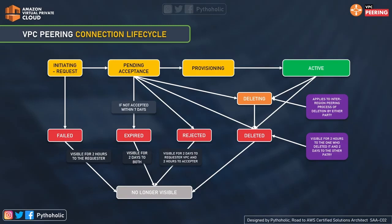To summarize the lifecycle — refer to the flow diagram for better understanding. You initiate the request, which may go to the pending acceptance stage where the acceptor has to accept it, moving it to the provisioning state and then to the active state. Once it is in the active state, you can make use of the peering connection. From the active state you cannot reject it, make it expired, or make it failed, but you can delete it if you no longer want it.